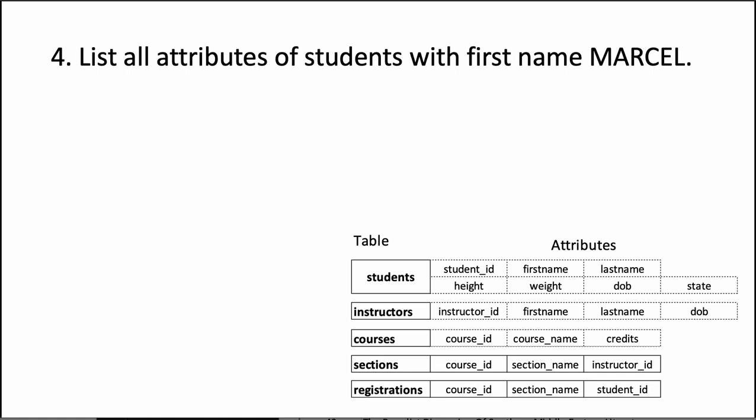Question 4 says, list all attributes of students with the first name Marcel. So like we said before, the first thing we need to think about is which table or tables contain the information of interest. In this case, it's obvious that it's the students table.